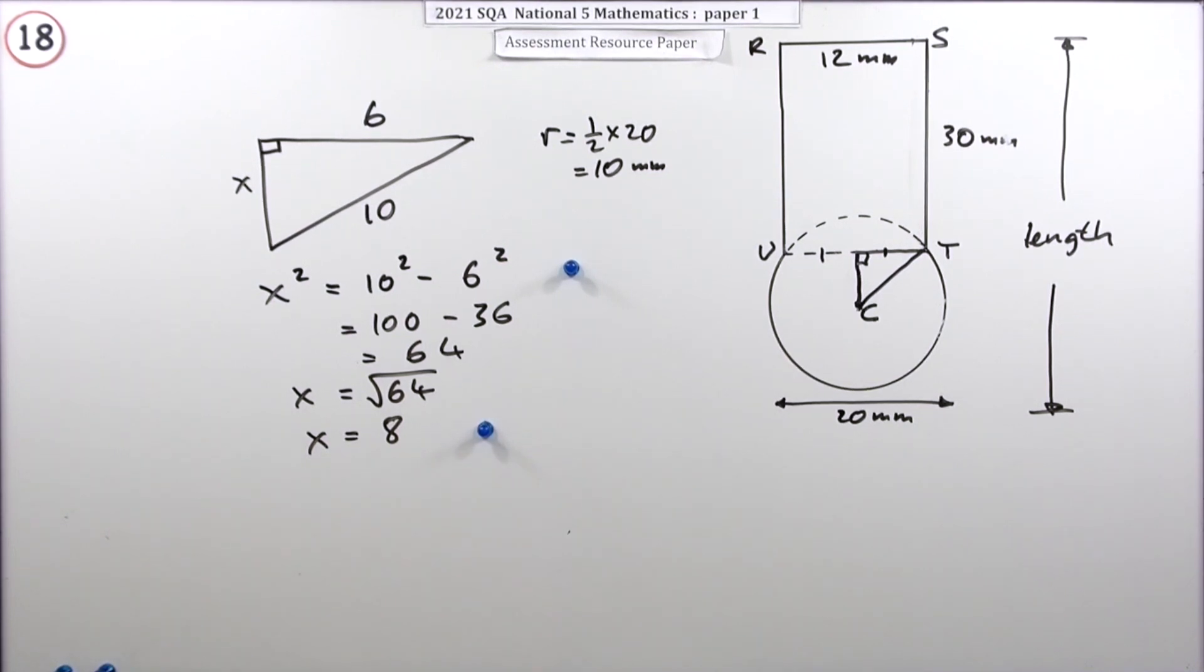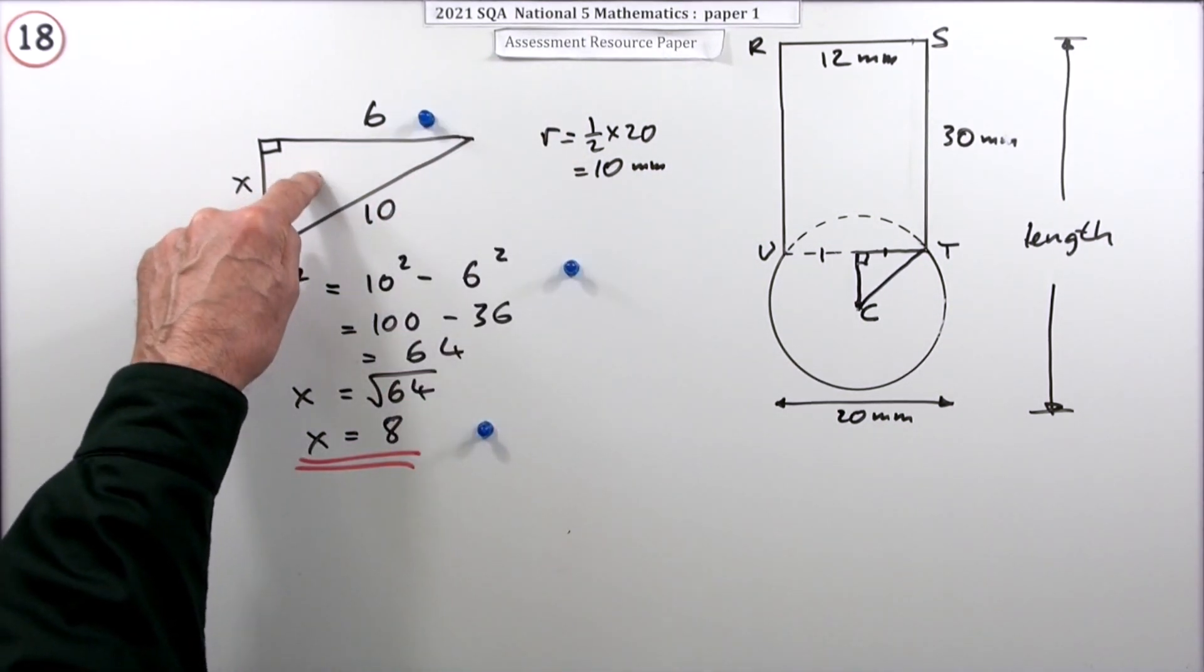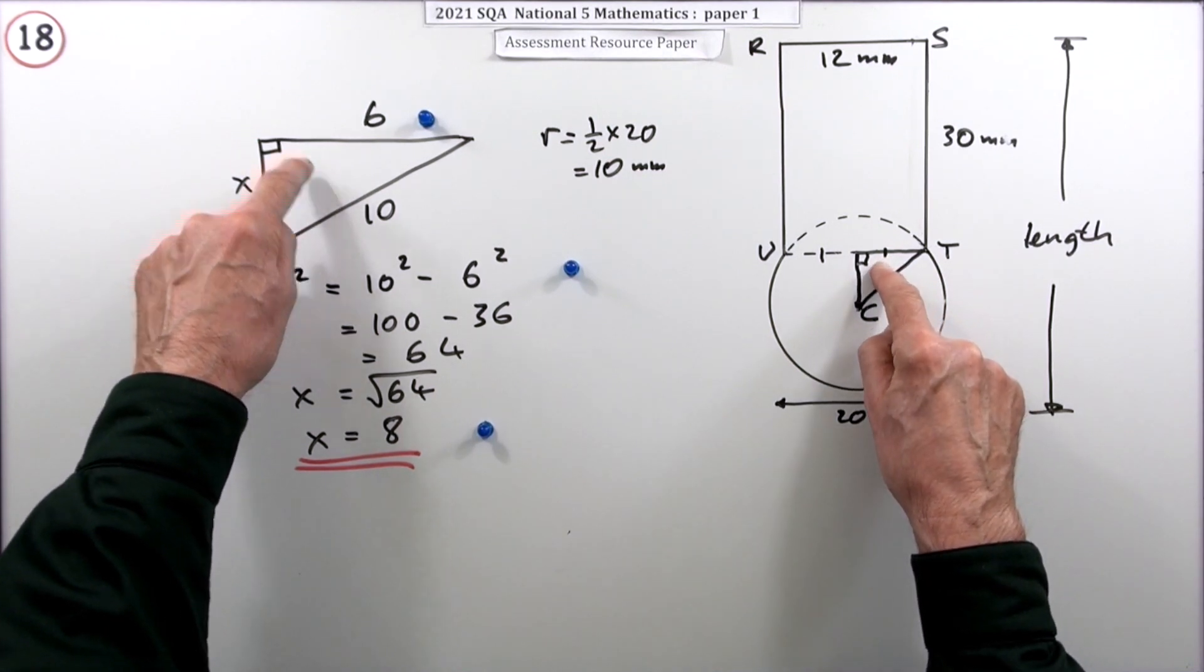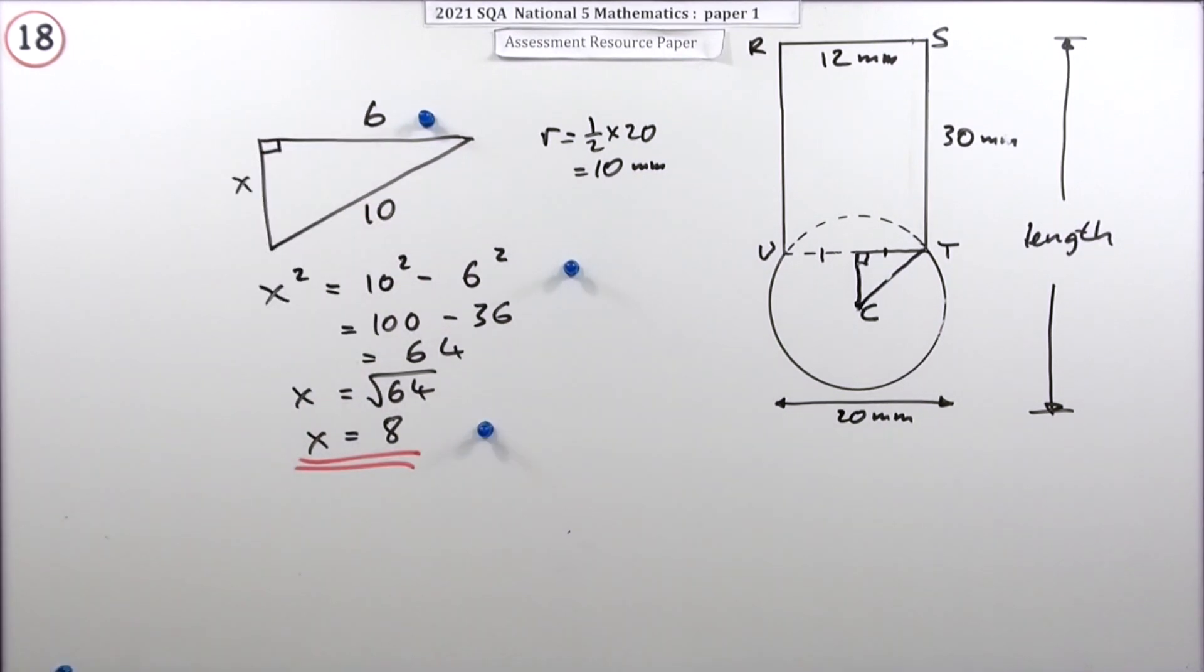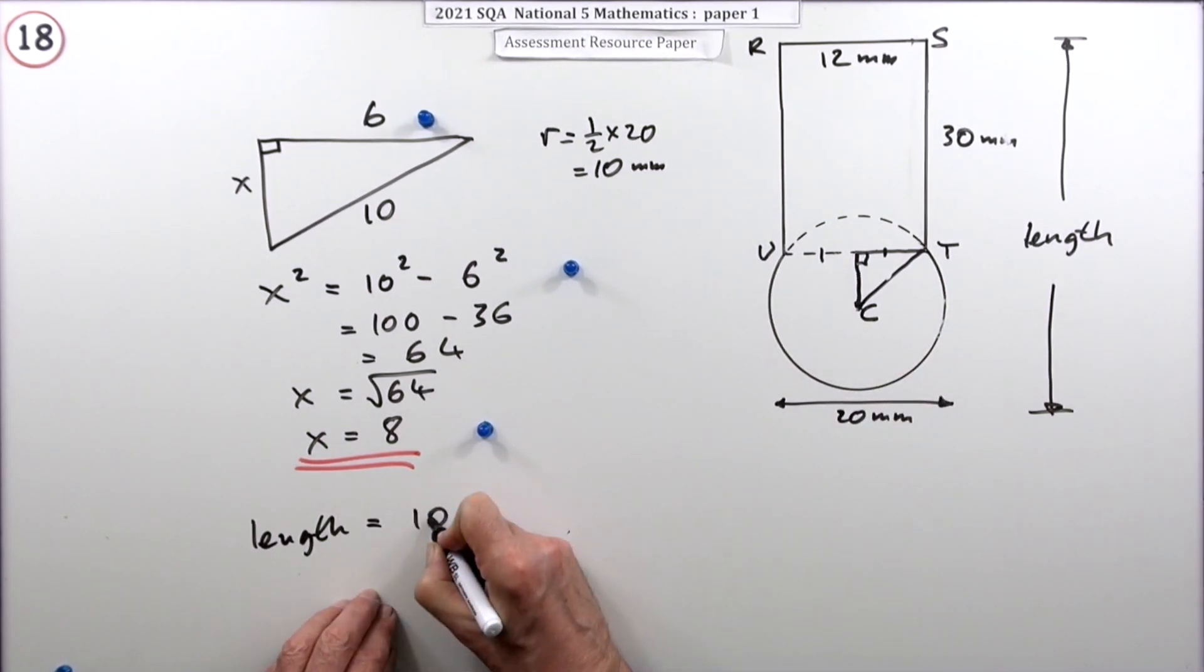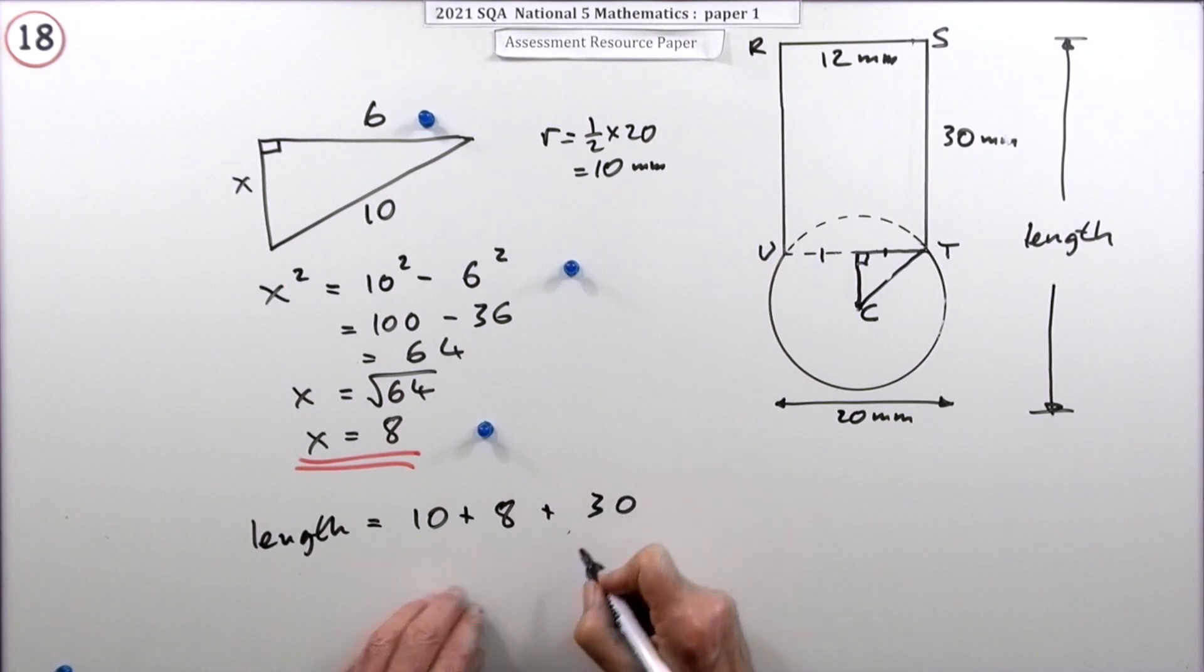There was a mark to begin with - that was the critical part, realizing you'd use this right angle triangle, extracting it and finding the relevant sizes. Now you can get the length: the radius which is 10 plus this distance you just worked out which was 8 plus the height of the rectangle which was 30. That's 48. The length is 48 millimeters.